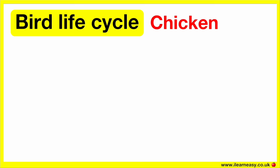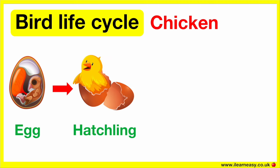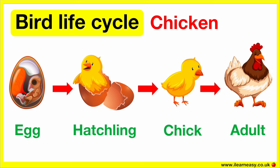A chicken is an example of a bird, so the life cycle is the same. The chicken lays an egg, which is then incubated until the embryo inside forms into a chick. Once the chick has developed, it will hatch out of the egg and be cared for by its parents. After a while, the chick will grow and learn to be independent as it becomes an adult.